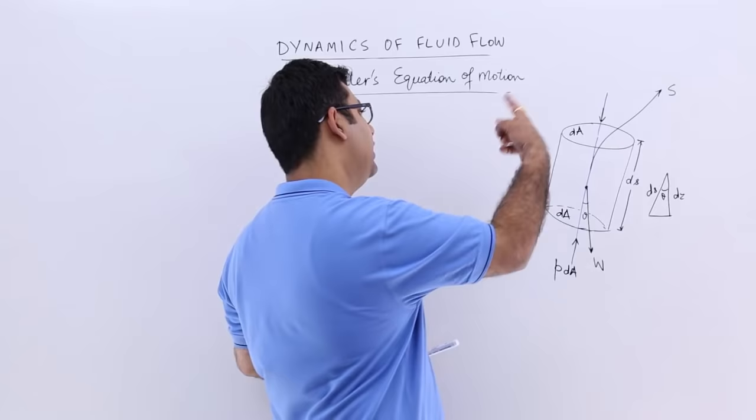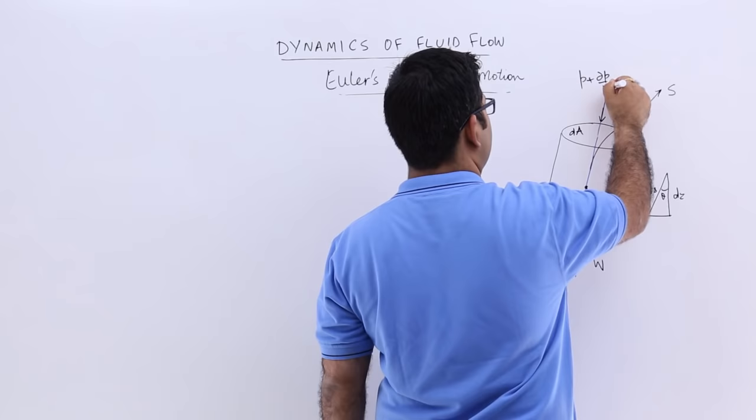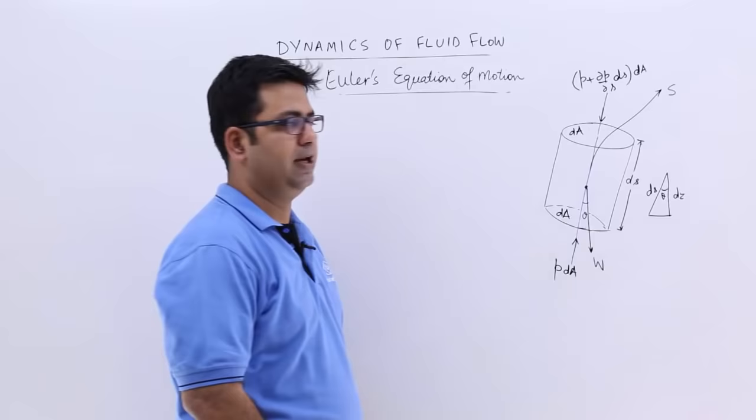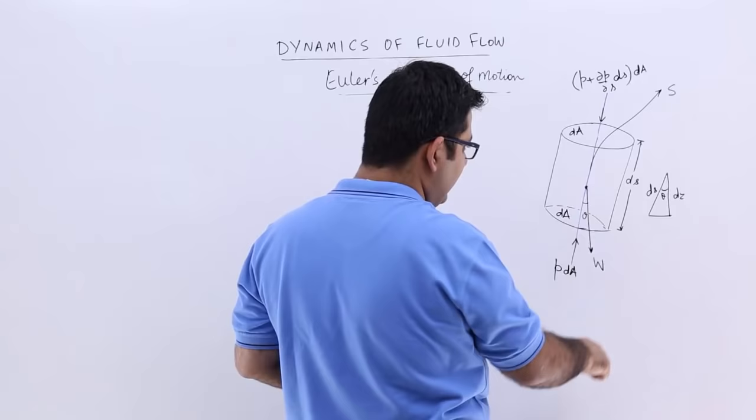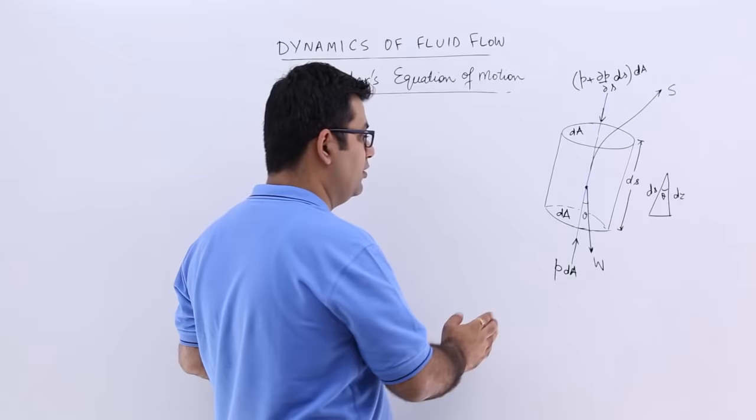And on the other end, there will be an opposite pressure force which is p plus the variation of p with the length into the total length, and you will have dA. Because the pressure varies with the depth. You have the weight of the element acting vertically downwards and the angle between the direction of flow and the weight is theta.